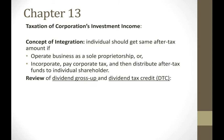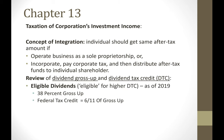Before we get into the details of Chapter 13, let's quickly review how dividends are taxed for an individual shareholder. If you're an individual shareholder and you receive a dividend from a corporation, you have to gross up the dividend and in addition to that, you get a dividend tax credit. There are two types of dividends. Eligible dividends need to be grossed up by 38% and the federal tax credit is 6 over 11 of the gross up.